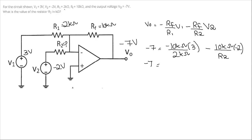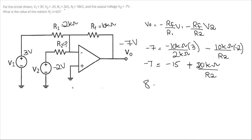Minus 10 divided by 2 is minus 5, and minus 5 multiplied by 3 is minus 15. Writing the second term: minus into minus gives plus, so plus 20 kilo-ohm divided by R2. So we have minus 7 equals minus 15 plus 20k/R2, which means 8 equals 20 kilo-ohm divided by R2.